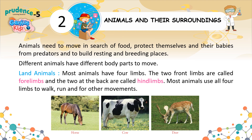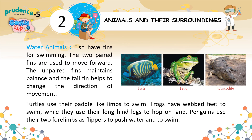Land Animals. Most animals have four limbs. The two front limbs are called forelimbs and the two at the back are called hind limbs. Most animals use all four limbs to walk, run, and for other movements. Water Animals. Fish have fins for swimming. The two paired fins are used to move forward. The unpaired fins maintain balance and the tail fin helps to change the direction of movement. Turtles use their paddle-like limbs to swim. Frogs have webbed feet to swim while they use their long hind legs to hop on land.